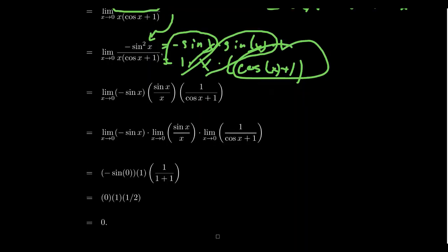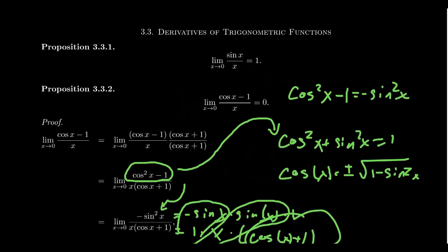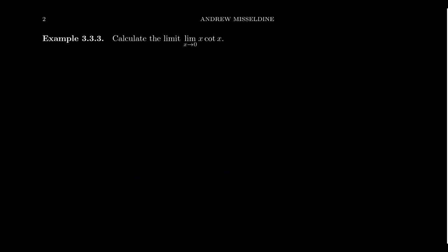In summary, these are two very important limits you're going to want to memorize for future calculations: the limit as x approaches 0 of sine x over x equals 1 — that's the most important one — and the limit as x approaches 0 of cosine x minus 1 over x equals 0. You want to memorize them in order to be successful in future limit calculations involving trigonometric functions.